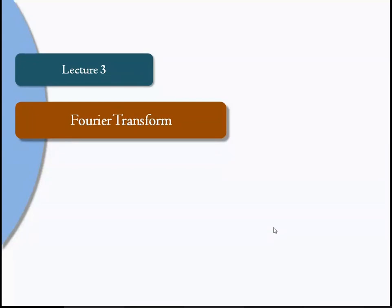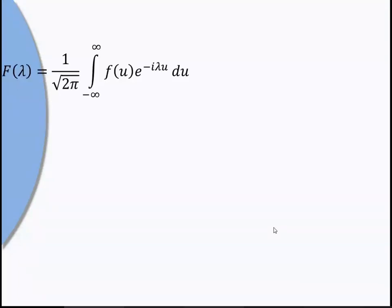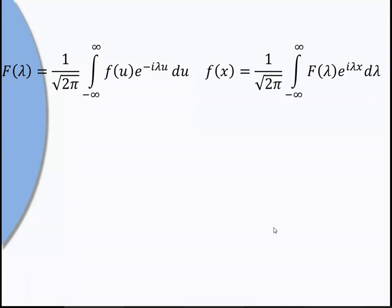We will see how to find a Fourier transform of a given function. We have taken three types of definitions. The general Fourier transform is f(λ) = (1/√(2π)) ∫_{-∞}^{∞} f(u) e^{-iλu} du, and the inverse Fourier transform is f(x) = (1/√(2π)) ∫_{-∞}^{∞} f(λ) e^{iλx} dλ, also called the Fourier integral representation.